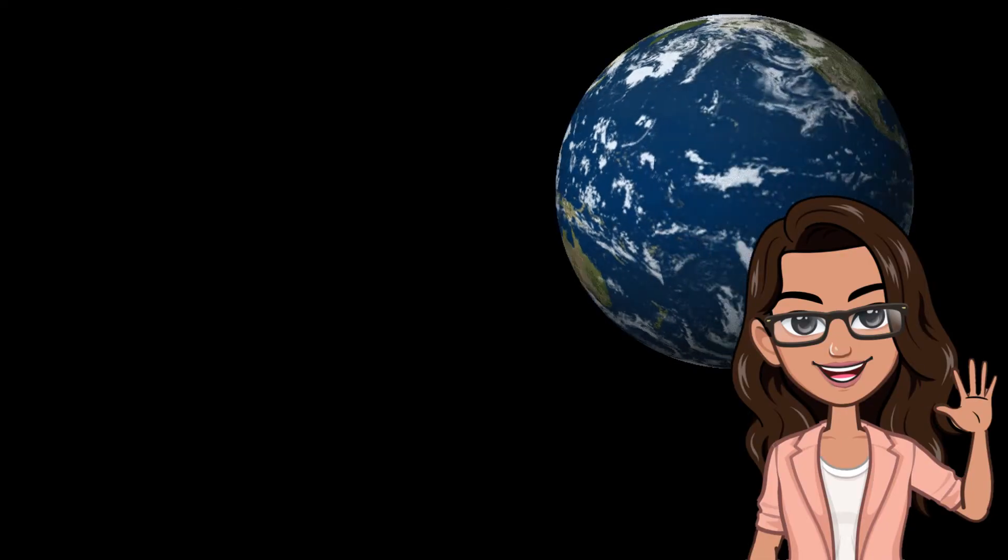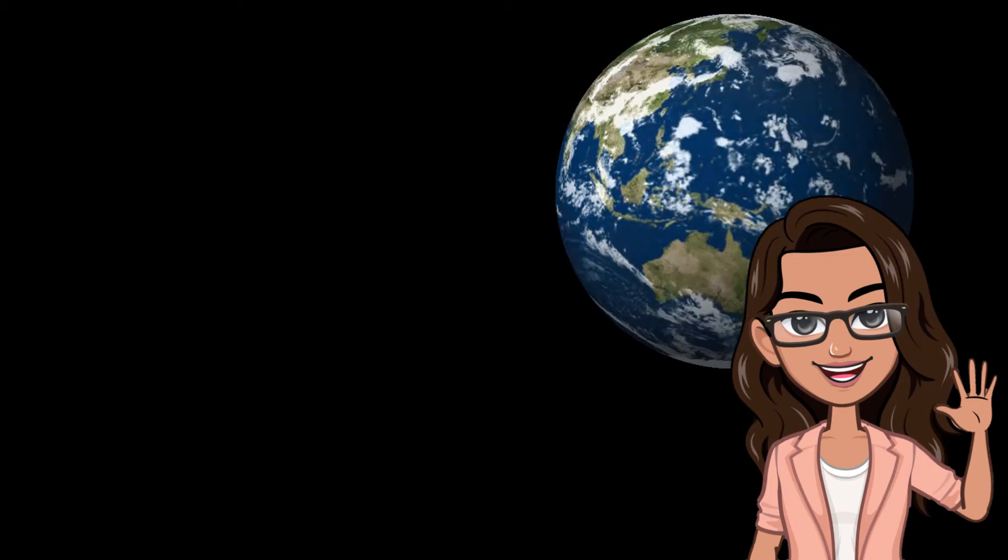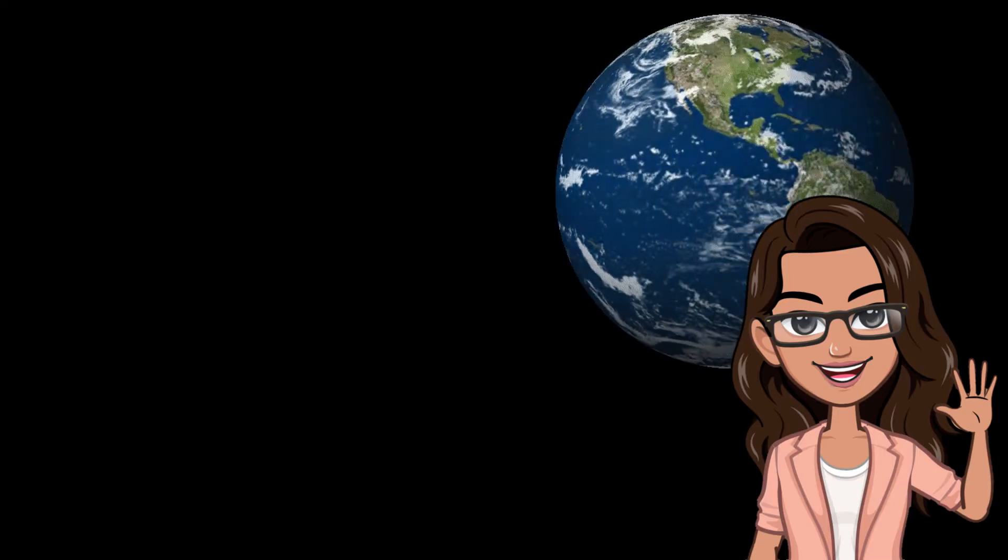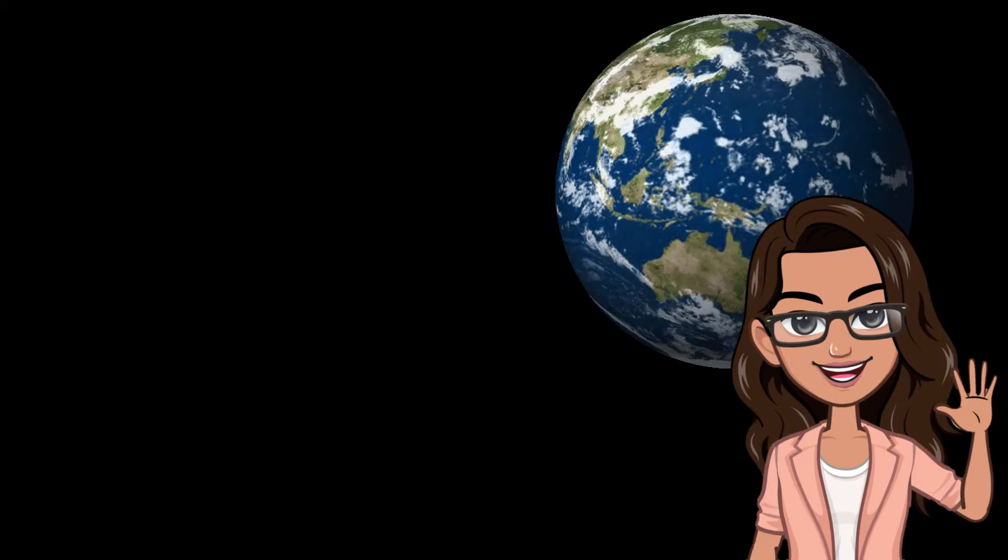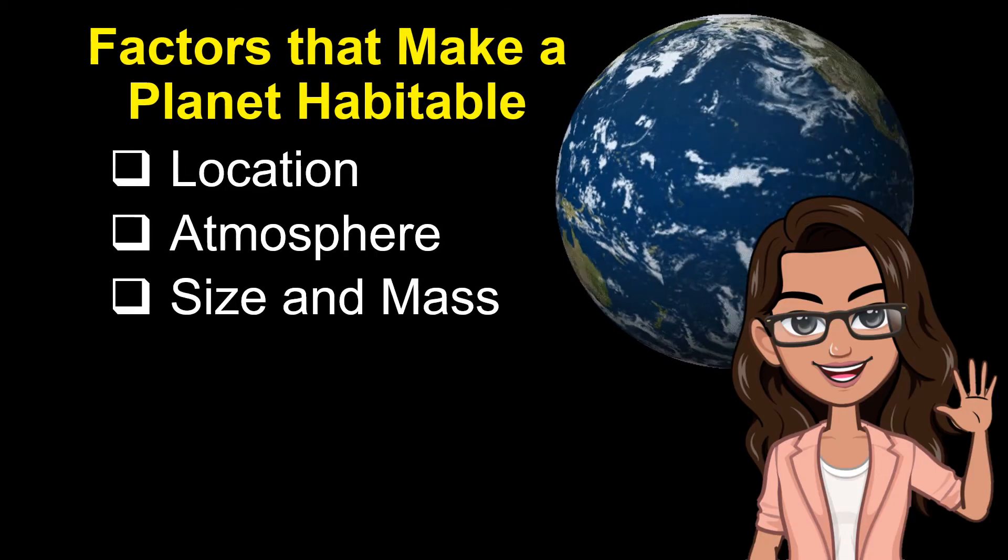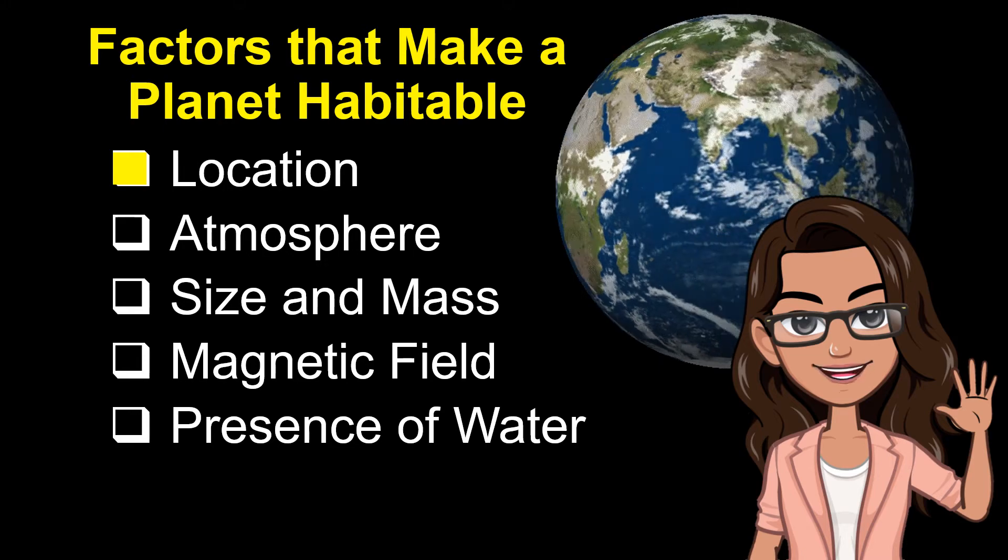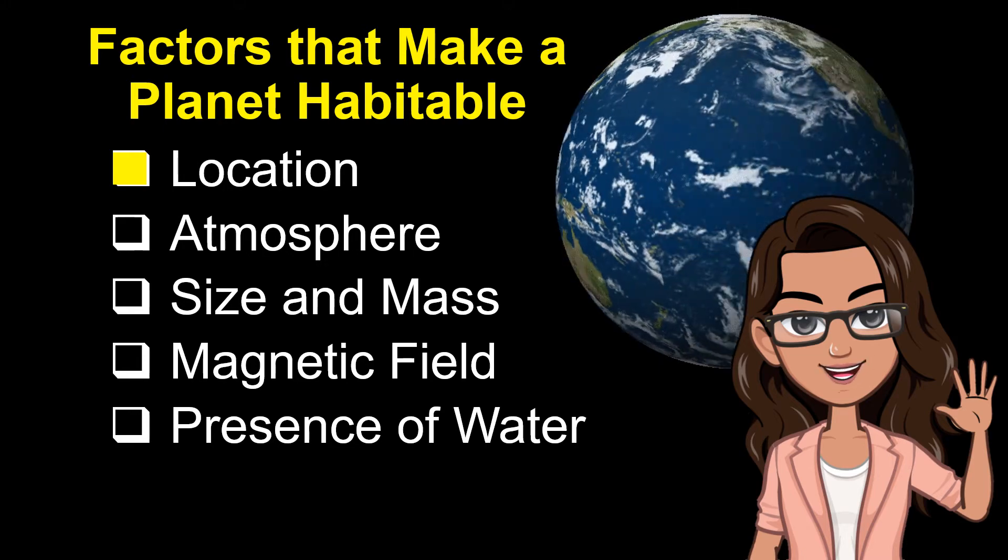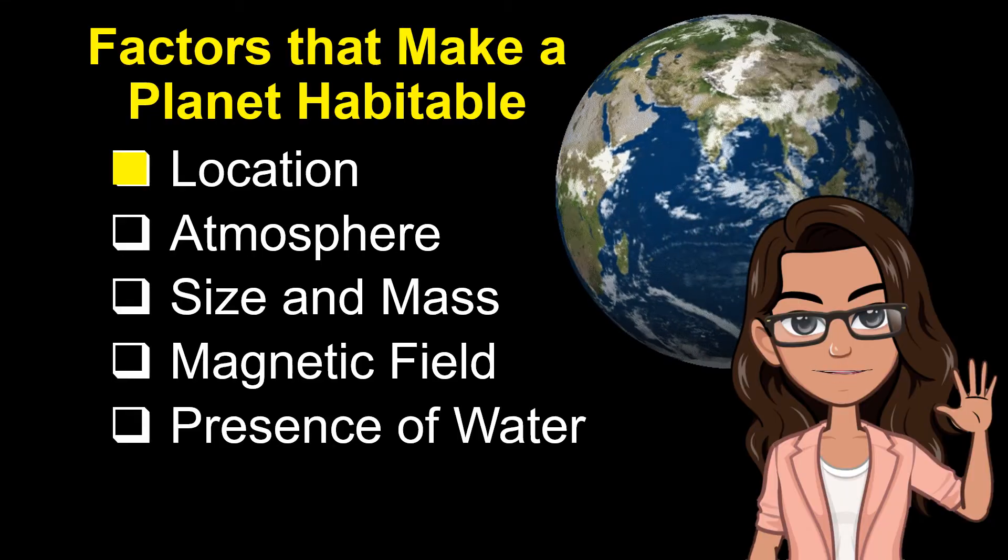Again, planet Earth possesses all the features and characteristics that make it habitable for all living forms. Let us go through with each one of Earth's characteristics. The factors that make a planet habitable or able to harbor living things are location, atmosphere, size and mass, magnetic field, and presence of water. Let's start with the first factor, location.